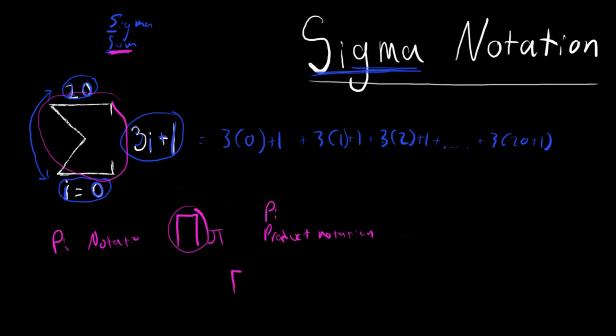And the way we would write it is pi, i equals 0 to, let's just say 5, and let's go i squared again.